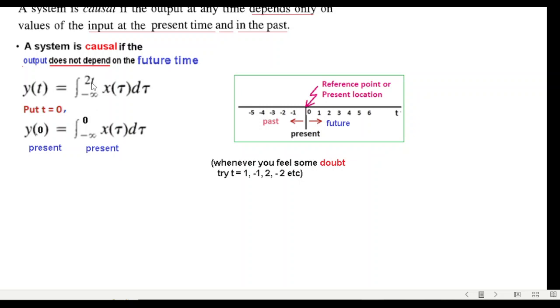But I mentioned to you that this 2t might be tricky, so let's try another value. So put t equals 1, and now you can see that y(1) equals from minus infinity to 2.